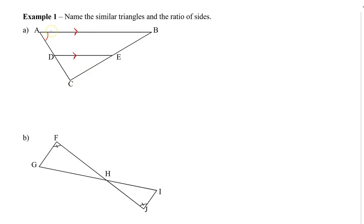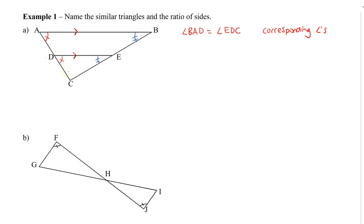The first one is that angle BAD over here is equal to angle EDC. And that is because of corresponding angles — where the two angles are located underneath or above the parallel lines. We also have another set: angle ABE equals angle DEC, and again these are also corresponding angles.